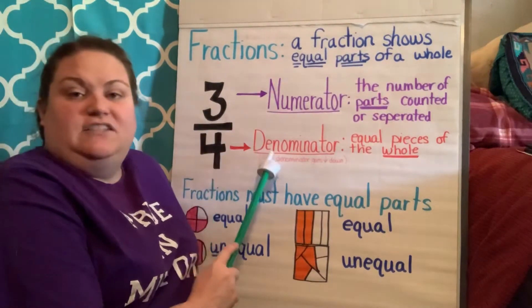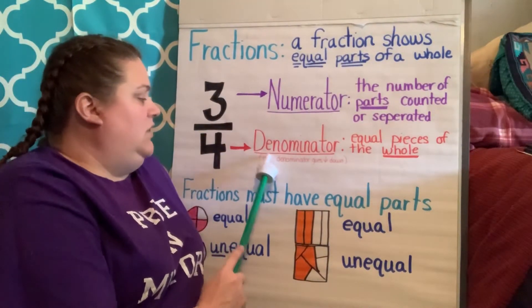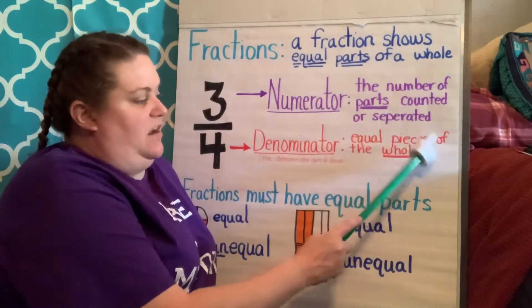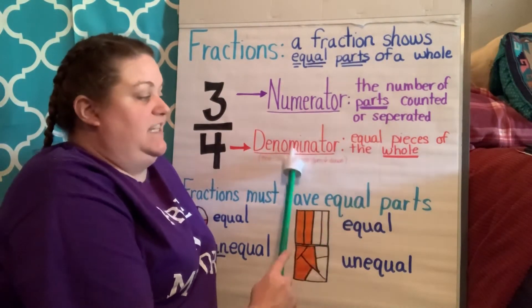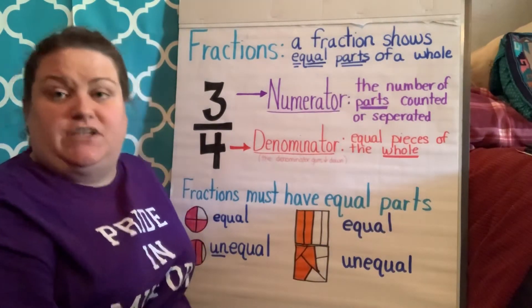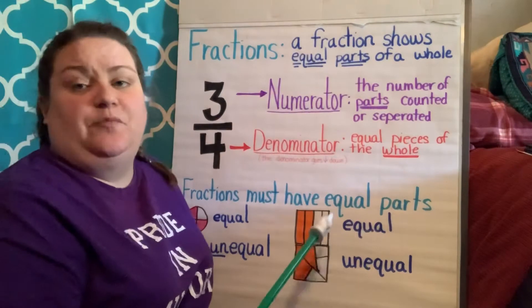Your bottom number is called the denominator. The denominator is the equal pieces of the whole. The denominator is the whole. How many pieces did you divide your object into? The total number of pieces.